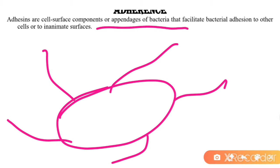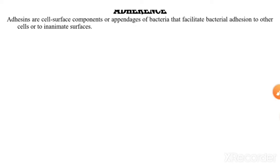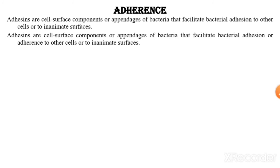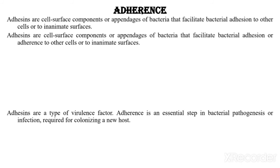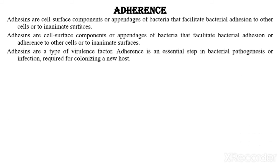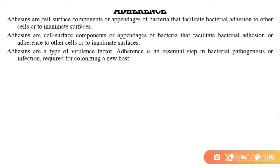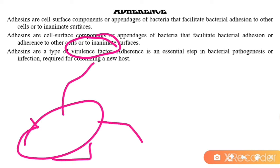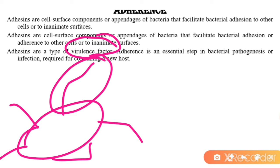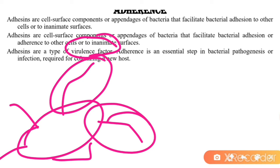Adhesins are cell surface components or appendages of bacteria present around the cell that facilitate bacterial adhesion to other types of cells. Adhesins are a type of virulence factor. Adherence is an essential step in bacterial pathogenesis or infection, required for colonizing a new host. With the help of adhesins, a bacterial cell or pathogen will attach to the host.